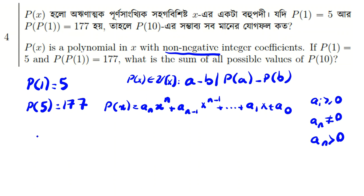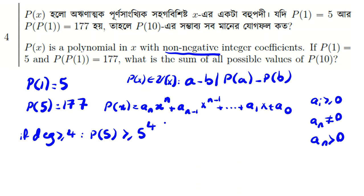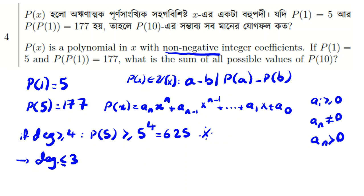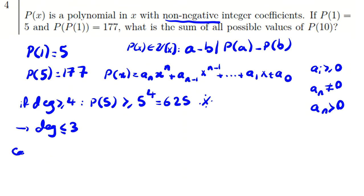We can say the degree is at most 3. If the degree were greater than or equal to 4, then p of 5 would be at least 5 to the power of 4, which is 625. Since all other coefficients are non-negative, p of 5 would be at least 625, which contradicts p of 5 equaling 177. So the degree is less than or equal to 3, and we consider four cases.